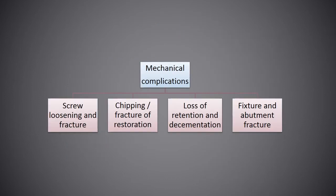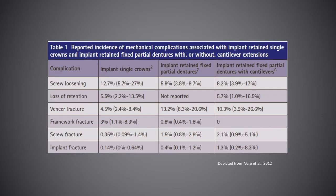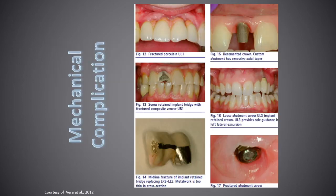The second category of dental implant complications is mechanical complications. The commonly reported mechanical complications associated with implant-supported fixed prostheses include fracture of the veneering material or framework, loss of retention, screw loosening, screw fracture, and implant fracture. The incidence of these complications associated with implant-retained single crowns and implant-retained fixed partial dentures with or without cantilever extensions after 5 years is presented in this table. Clinical photos of these mechanical complications are also shown.